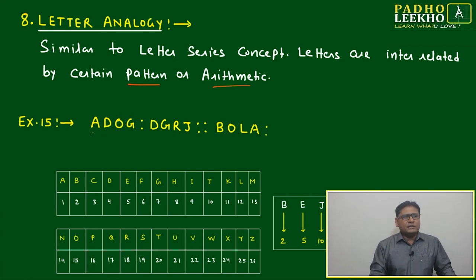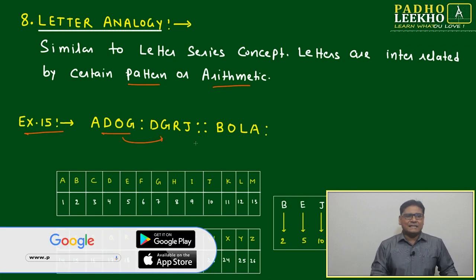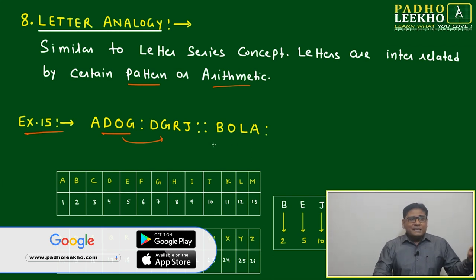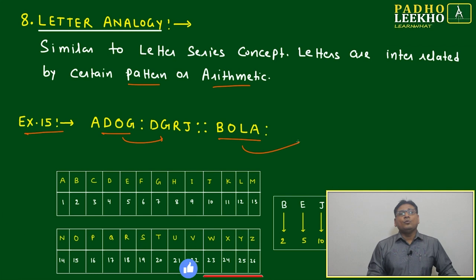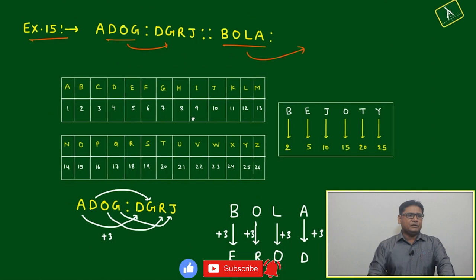Let's look at example 15. ADOG is interrelated to DGRJ in which way? We have to find in which way it is interrelated. Similarly, BOLA will be related to which set of letters? Let's try to understand what is happening here.